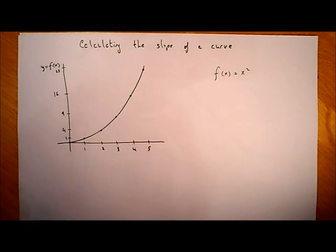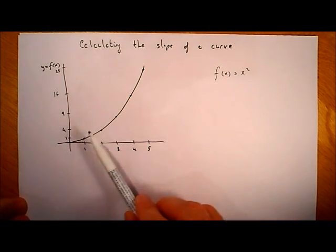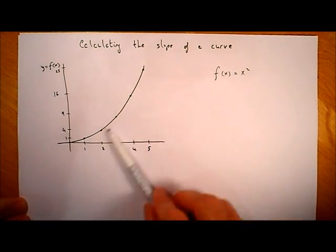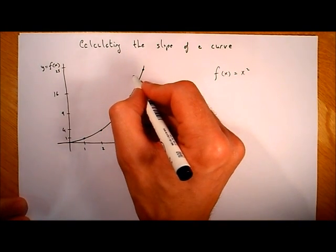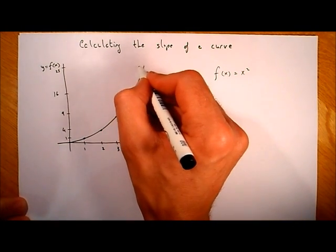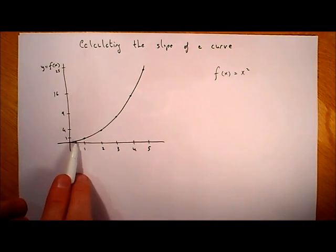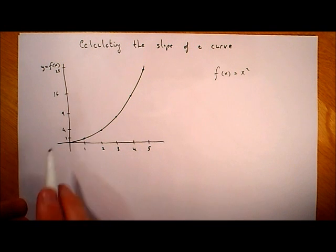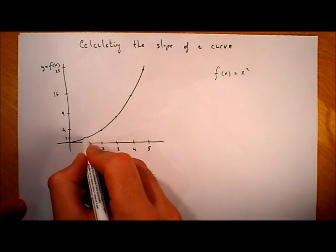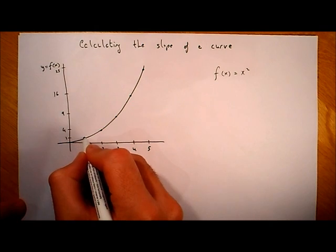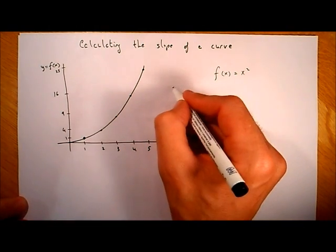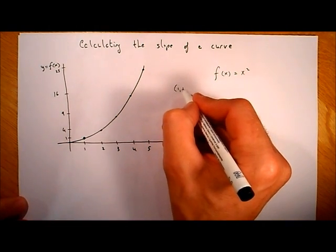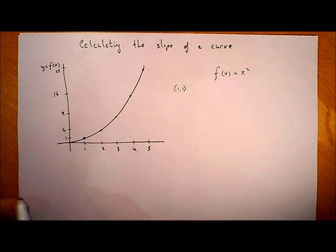One thing you'll notice is that the slope is changing — it's much steeper up at the top part. If you were trying to walk up here, it's much steeper up here than it is down here. So we need to come up with a method to find the slope. Let's say we want to find the slope at the point (1, 1), down here.